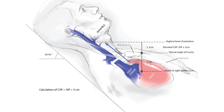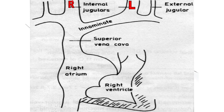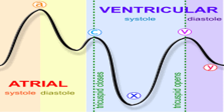Why is the JVP a representation of what's going on in the right atrium? If you go back to anatomy, you'll find that the internal jugular vein alongside the external jugular both drain to the superior vena cava and ultimately the right atrium. This means whatever pressure changes take place in the right atrium throughout the cardiac cycle will be transmitted through to the jugular system, and that's what we get in the curve.